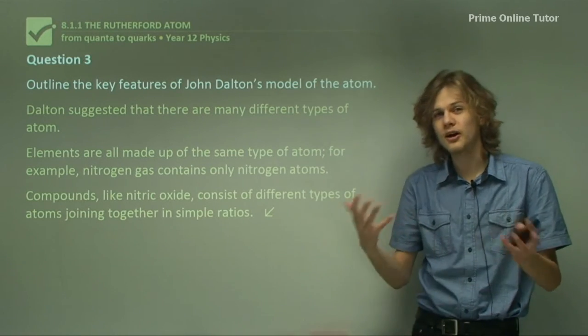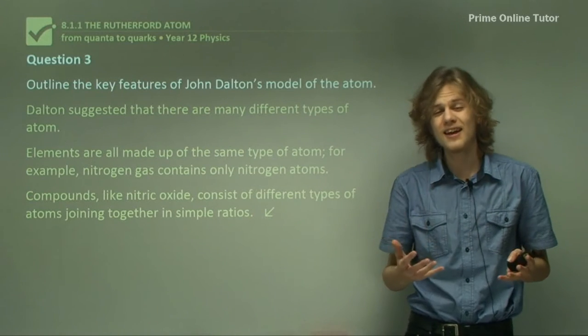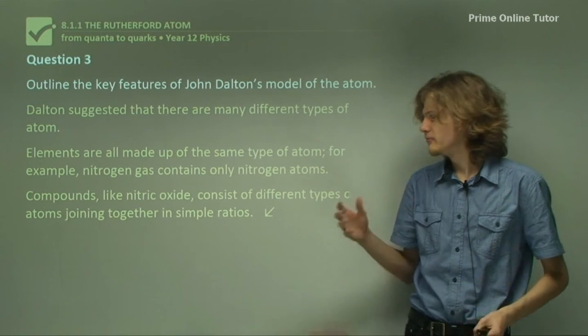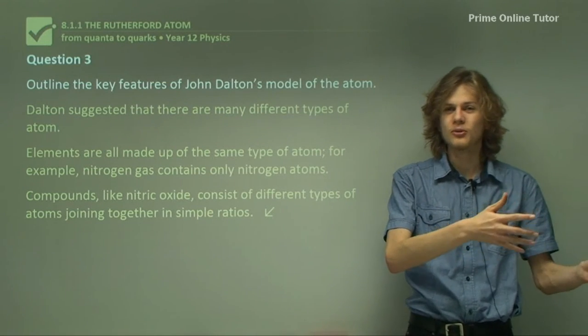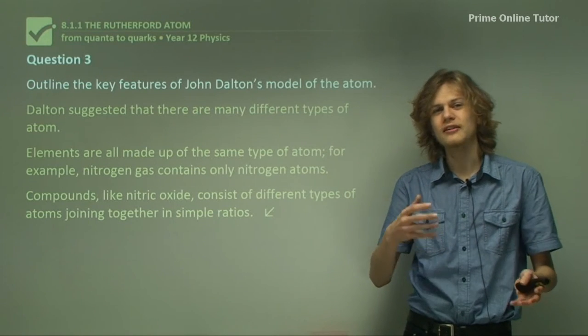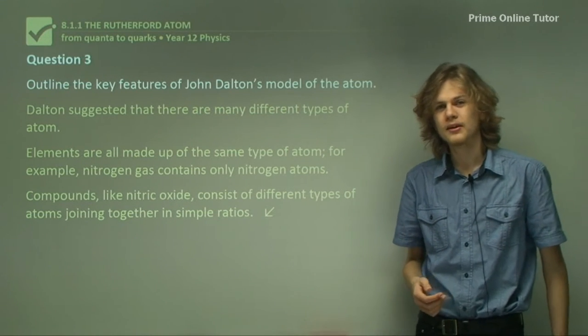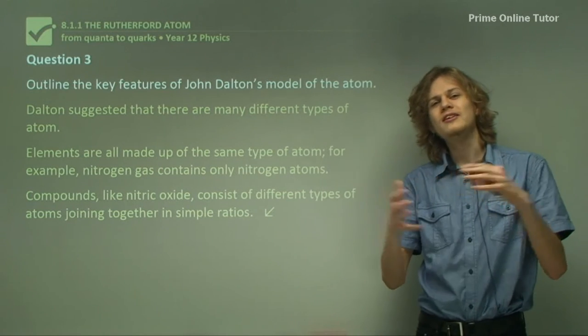And there must be some other feature we can name. Compounds, like nitric oxide for example, consist of different types of atoms joining together. This is a feature of Dalton's model that was different to the original atomic model, but retains elements of the elemental model, so that different elements could join together. And of course, he was able to create this model due to his experiments with joining different gases together.